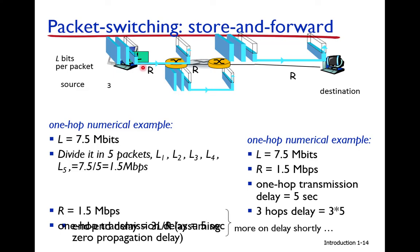With the data divided into five packets, each packet is 1.5 MB. The link bandwidth is 1.5 Mbps, so each packet takes 1.5 divided by 1.5 equals 1 second to transmit across one link. If the same 7.5 MB data is sent in a single packet it takes 15 seconds — now let's see how long it takes divided into five packets.